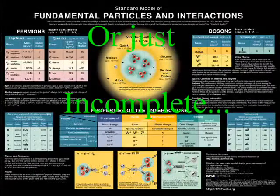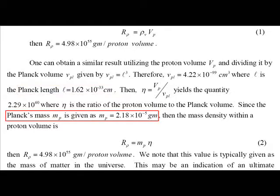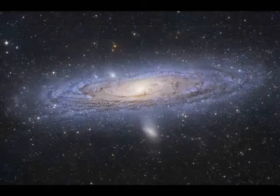By using the proton volume to Planck volume ratio multiplied by the Planck mass, we get the same result of 4.98 times 10 to the 55th grams. The entire mass of the universe inside every single atom.